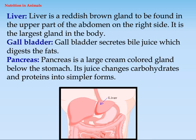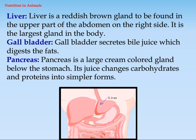Liver: the liver is a reddish-brown gland found in the upper part of the abdomen on the right side. It is the largest gland in the body.